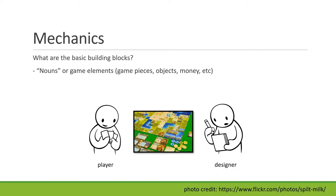We can think of mechanics as coming in three kinds of building blocks. First, we need game elements — objects, game pieces, tokens, money, chips. These are the things you will find on a game board or in a computer, purely virtual but still objects we can work with. We can think of them as nouns, the way we use nouns in language. That's category number one.